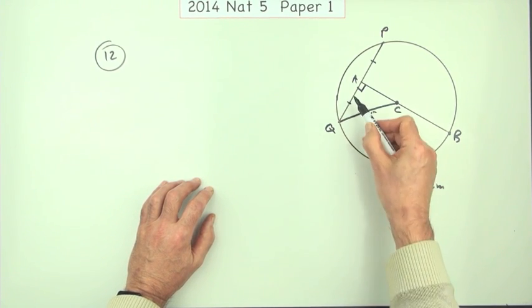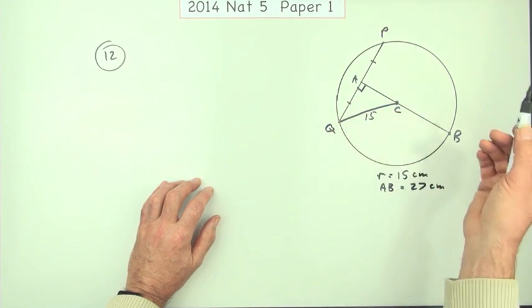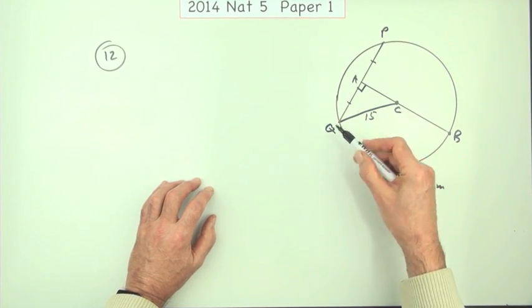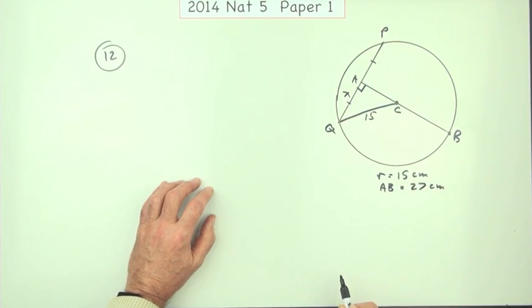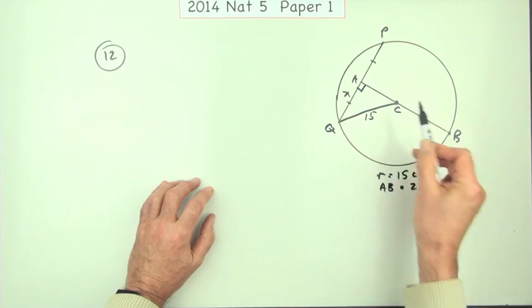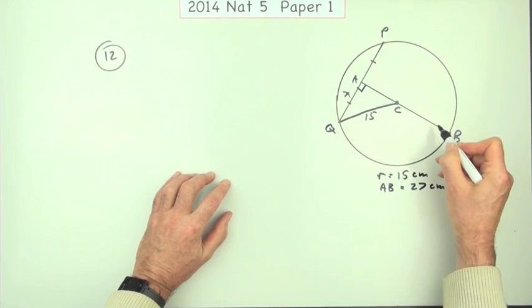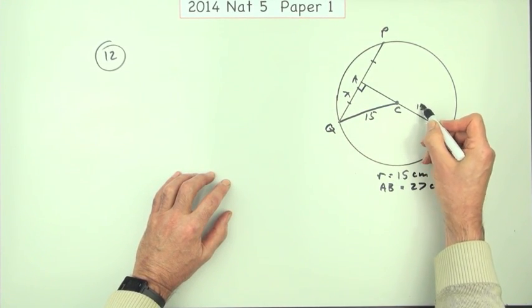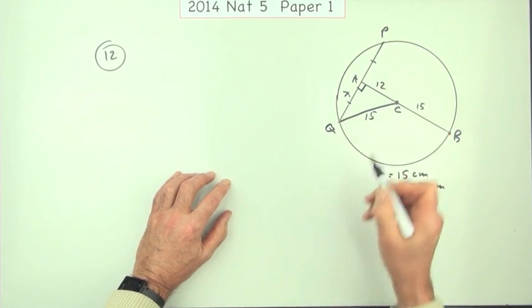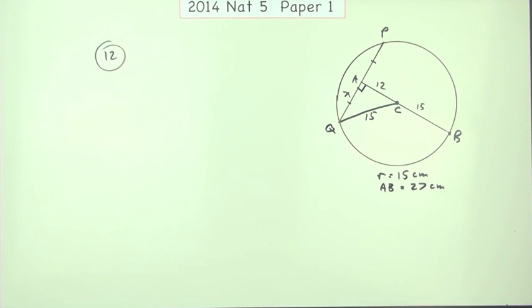That's the one I want to find, so I don't know that yet. I could call it AQ or I could just call it X. But I should be able to work out this because it says the distance AB is 27. So if that's 27 altogether, since that part's 15, that part must be 12.